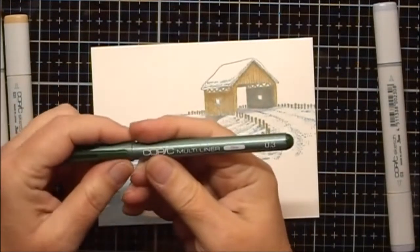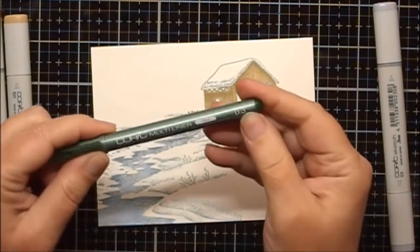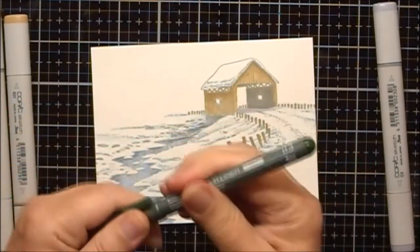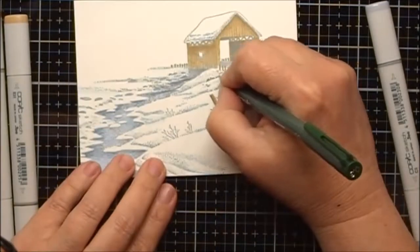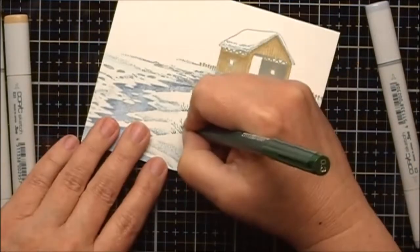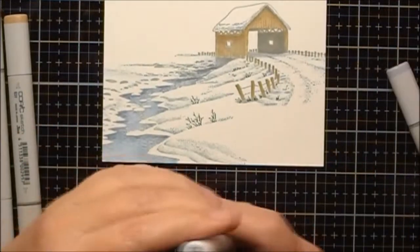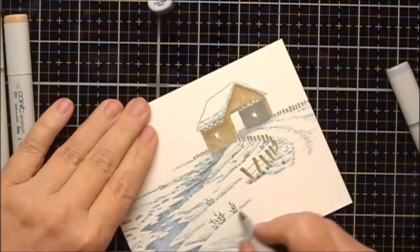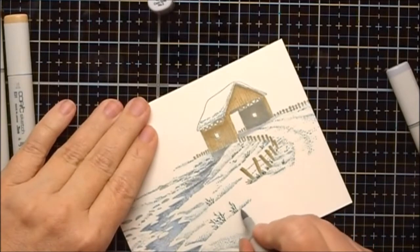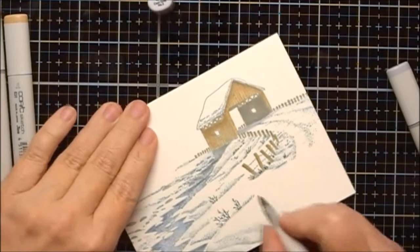And I'll use a Copic multiliner in 0.3. This one is color olive. And I'll use a C2 cool gray to add a little bit of shadow underneath this.